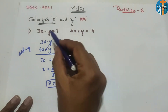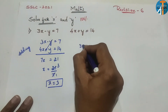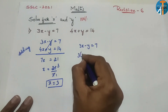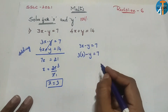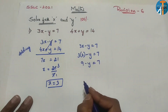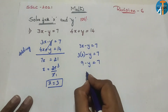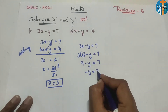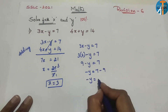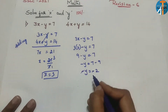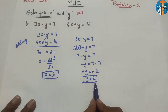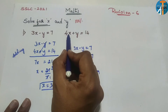Now substitute x = 3 into the equation 3x minus y = 7. So 3×3 minus y = 7. That gives 9 minus y = 7. Therefore minus y = 7 minus 9, which is minus 2. The minus-minus cancels, so y equals 2. Therefore x = 3 and y = 2.